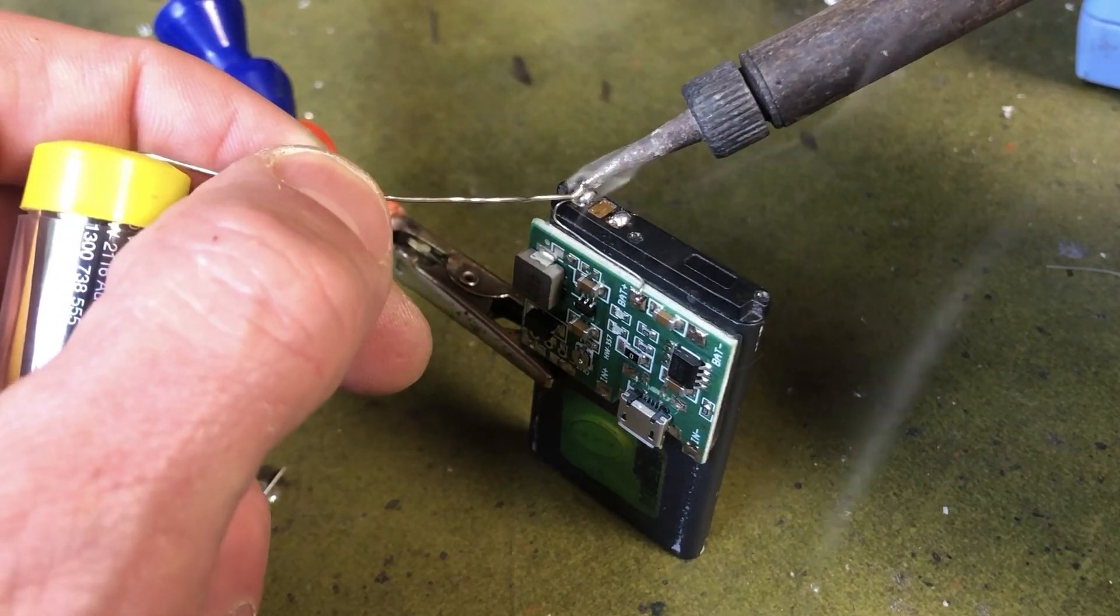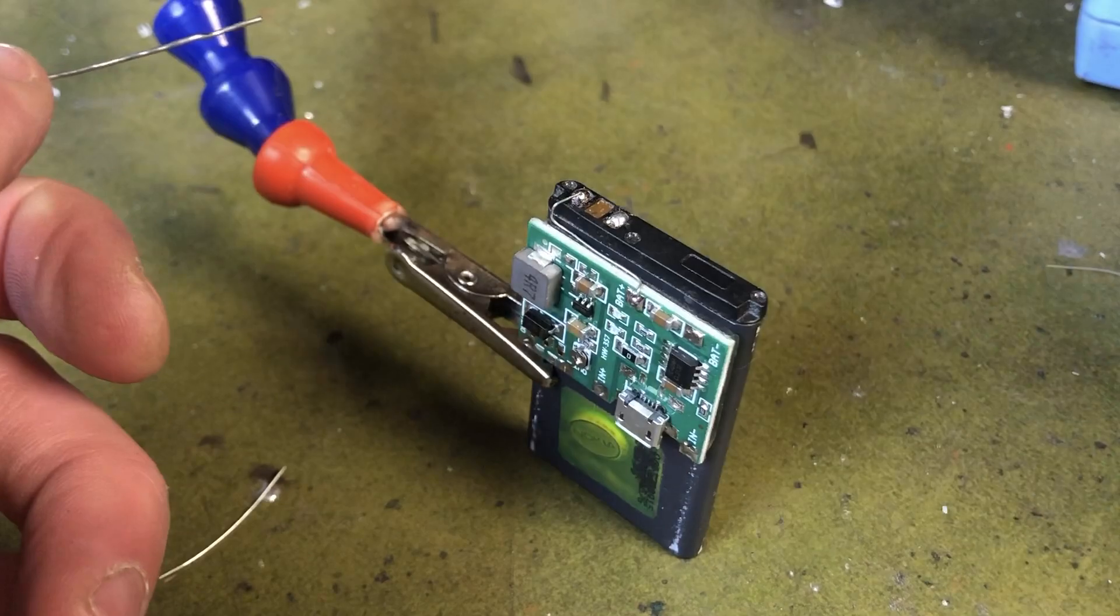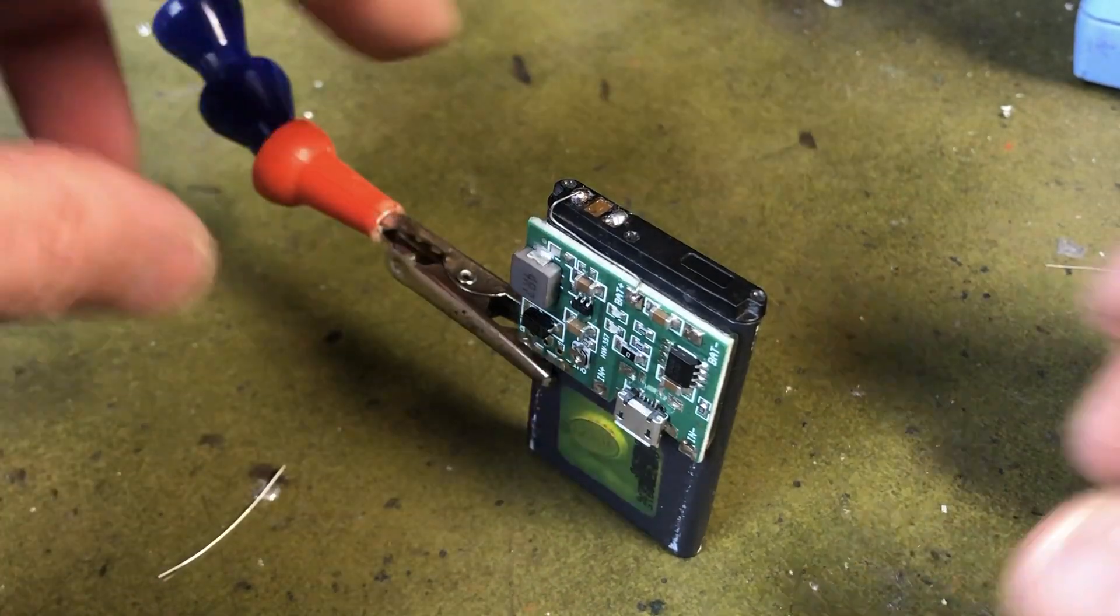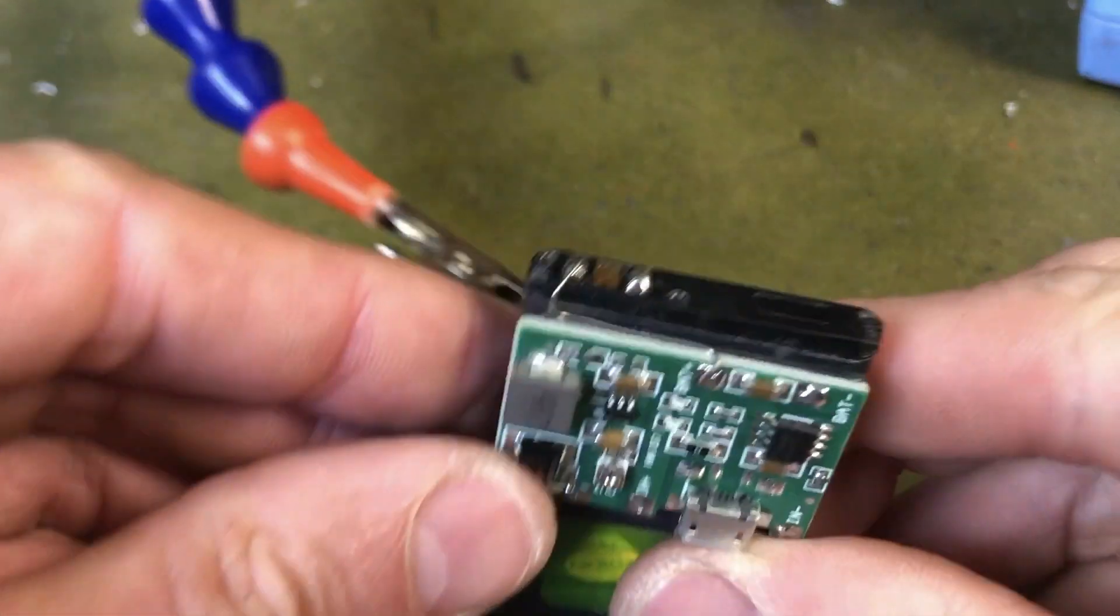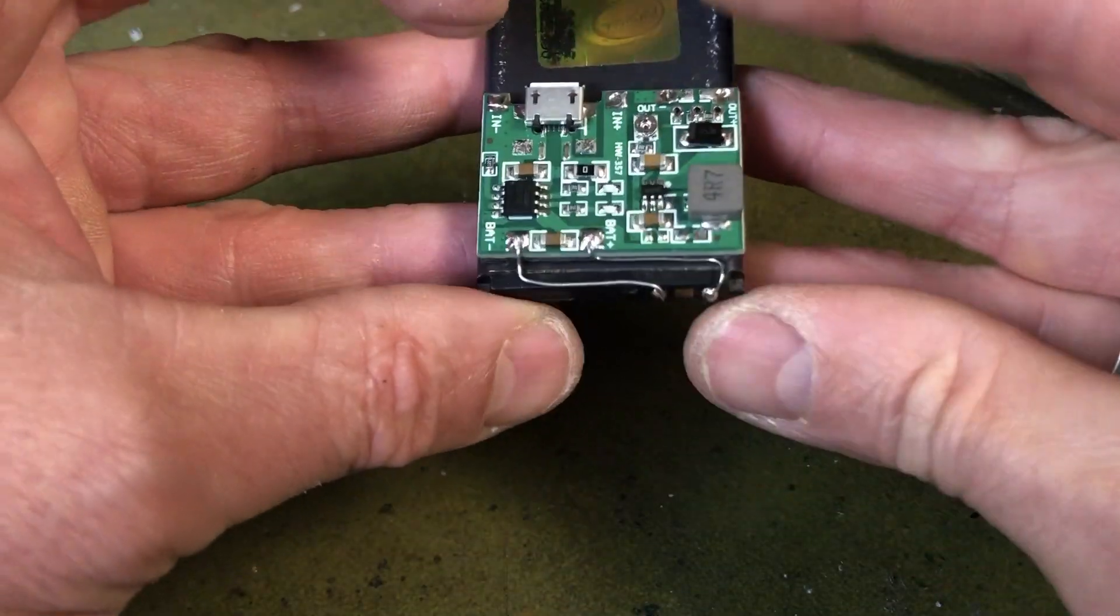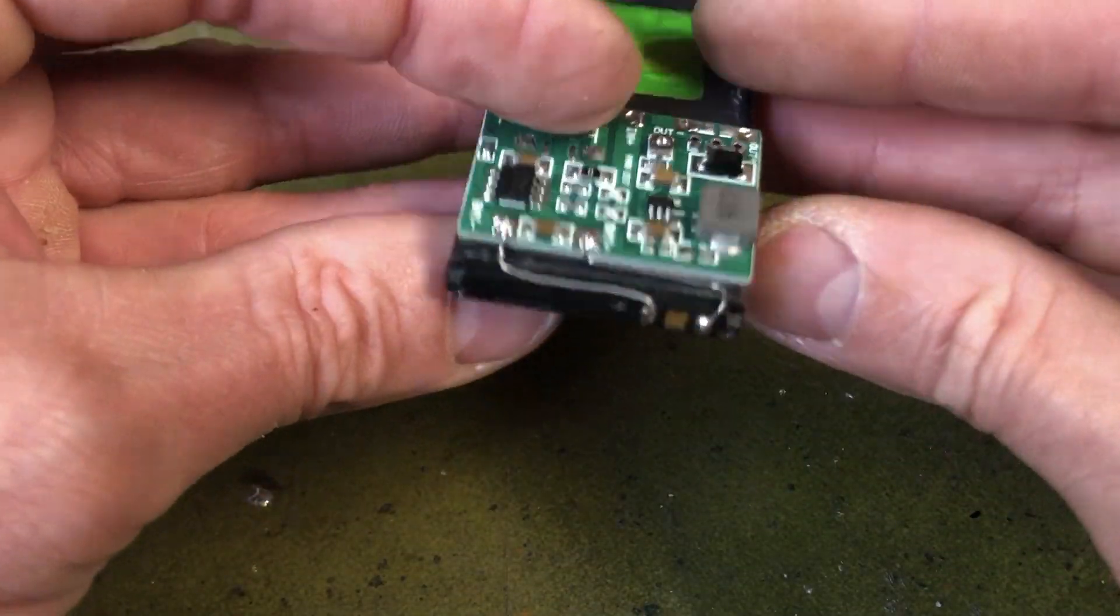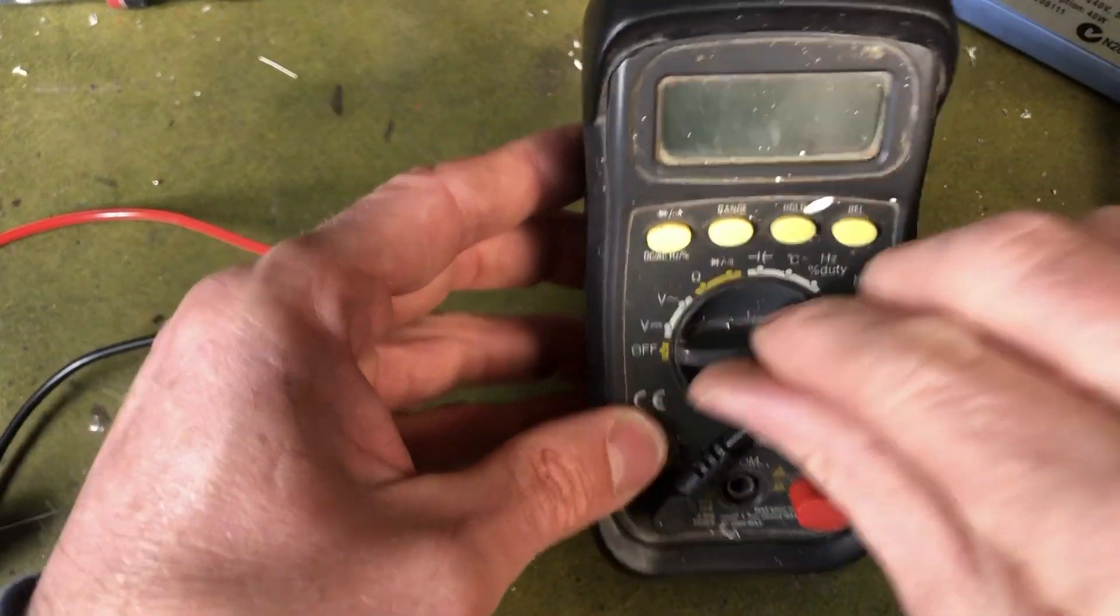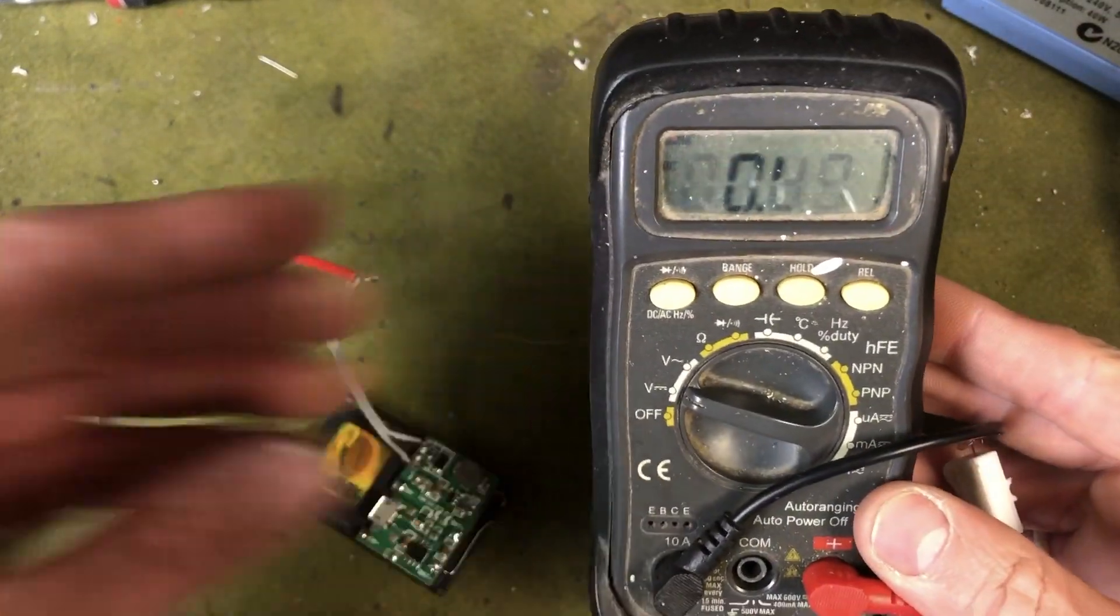So you have to solder that on to the wire onto the battery terminal as I'm doing here. You also have to do the same thing for the negatives, so again use a resistor leg to do that.